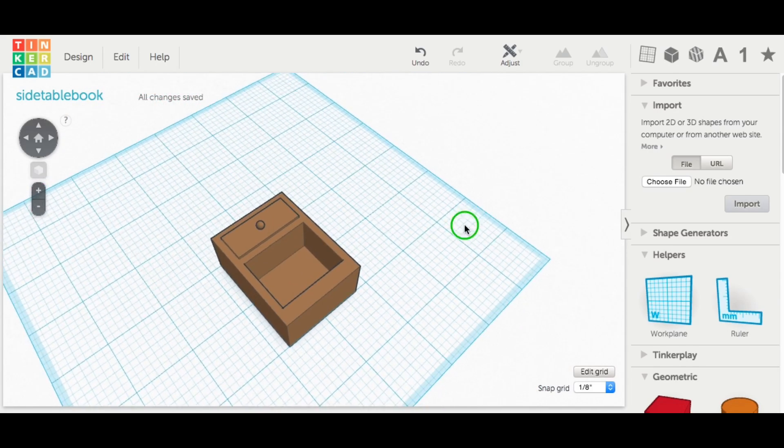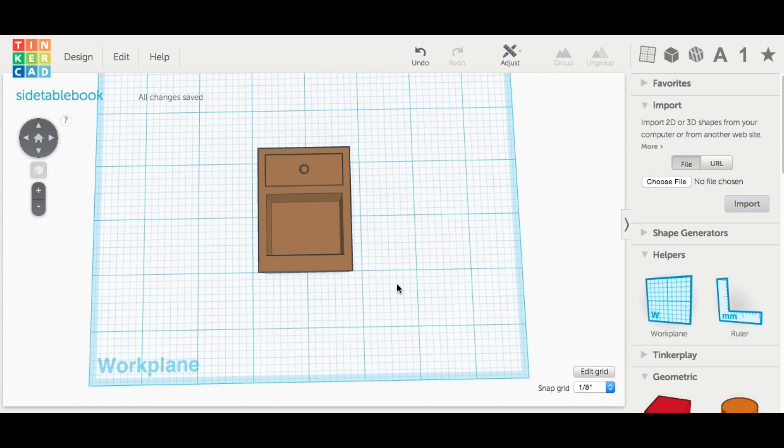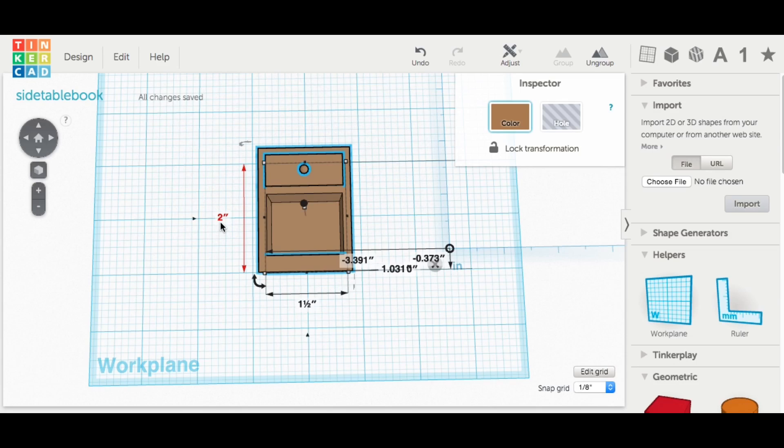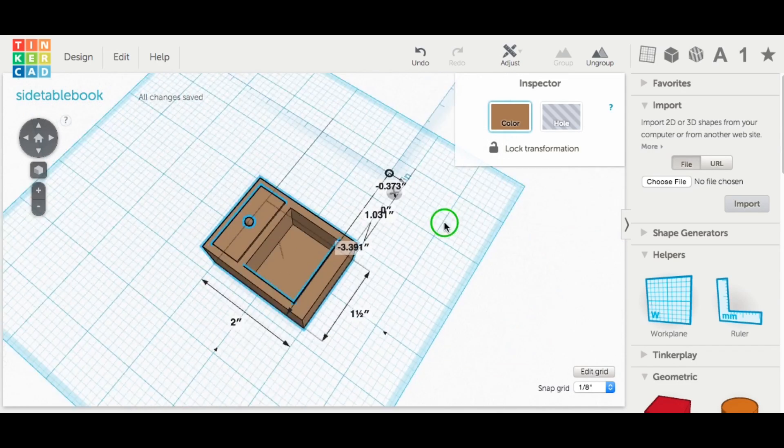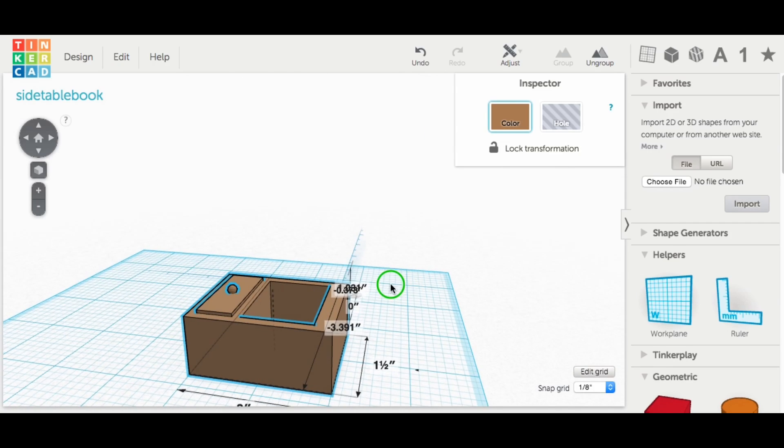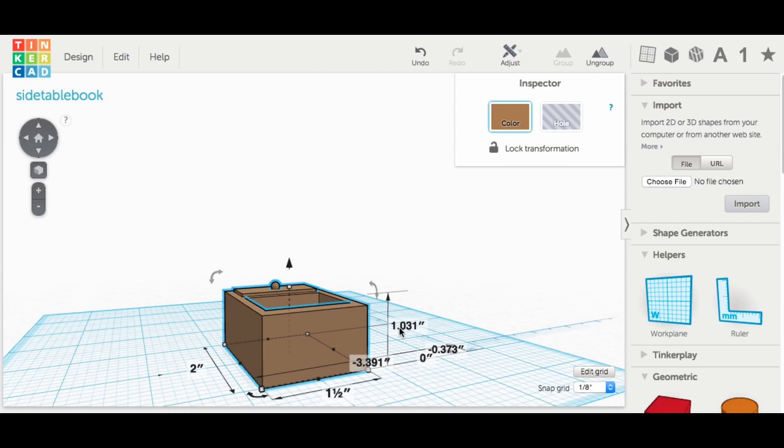So everything looked good and this is miniature. So let me show you the sizes here. If I bring the ruler over, you can see it's two inches tall, one and a half inches wide, and just over one inch deep. It's really 1.031, and that's because of the knob.